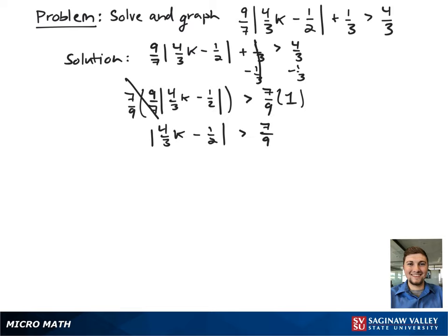Now that we have the absolute value by itself on one side of the inequality, we can rewrite it as 4 thirds k minus 1 half is less than negative 7 ninths, or 4 thirds k minus 1 half is greater than 7 ninths.